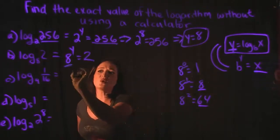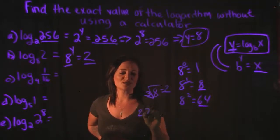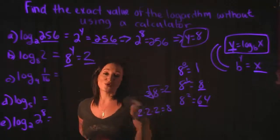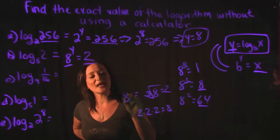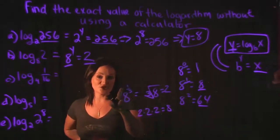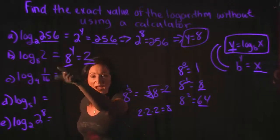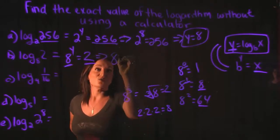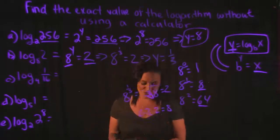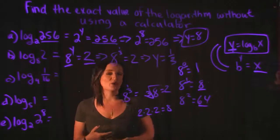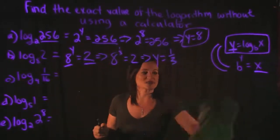One thing I know about eight and two is that the cube root of eight is equal to two — two times two times two equals eight. The cube root of eight is the same as raising eight to the one-third power. So eight raised to the one-third power equals two. That means Y must equal one-third. It's the only power you can raise eight to in order to get two.